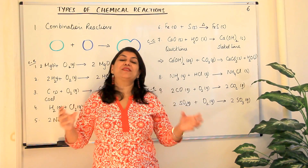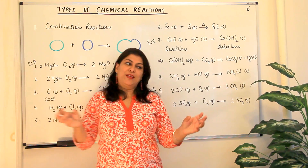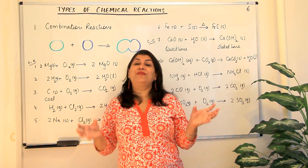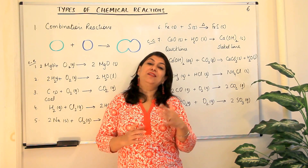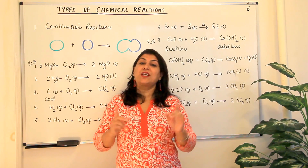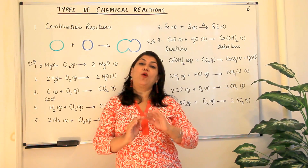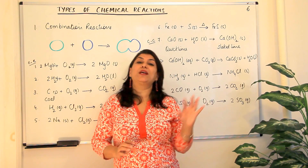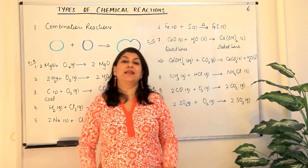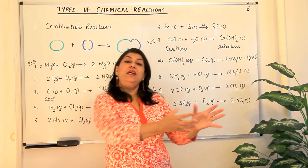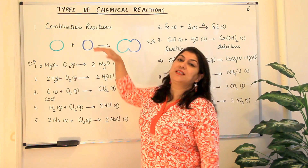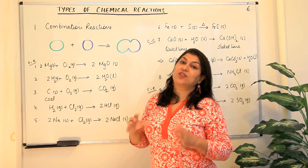Then came the fourth kind, that was a double displacement reaction, where there was a complete exchange of positions of parts of reactants. And the final was the oxidation-reduction reaction, where I gave you one definition: when oxygen is added it's known as oxidation, and when oxygen is removed from a reactant, that process is known as reduction. Let us now discuss these different types of reactions one by one.